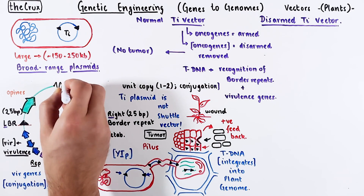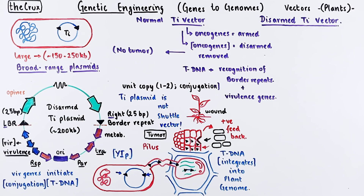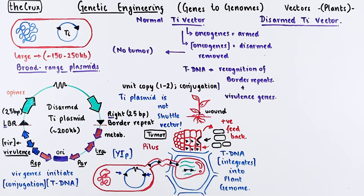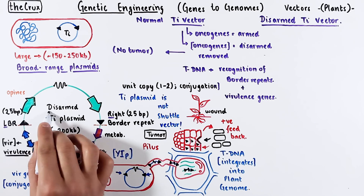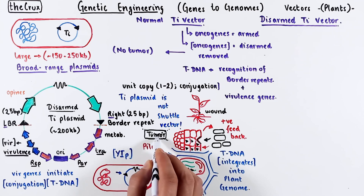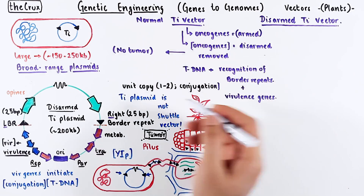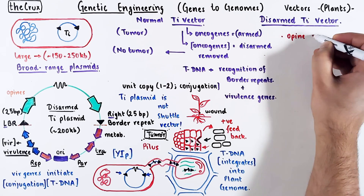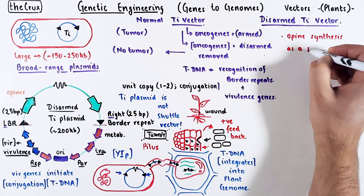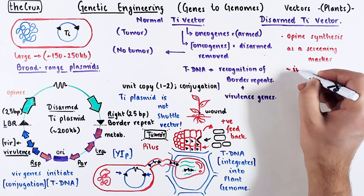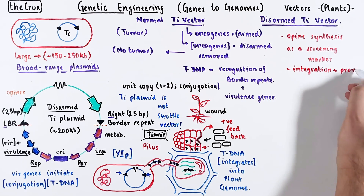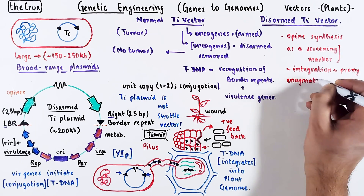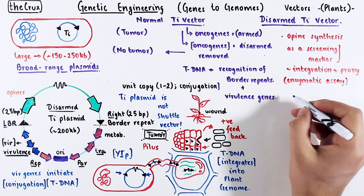This non-oncogenic Ti plasmid is called a disarmed Ti vector. Agrobacterium containing a disarmed Ti vector will infect and transfer the T-DNA in the same way, which can carry our DNA of interest, but it does not result in any visible tumor. Opine genes are typically not removed from the T-DNA — they make specific enzymes that can be used as a screening marker, which serves as a proxy for integration of the T-DNA. The screening typically involves some enzymatic assays.